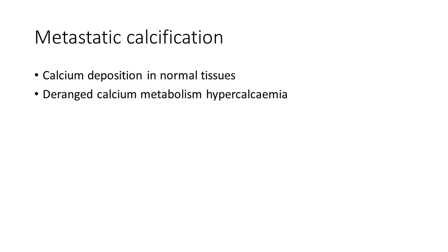Histologically, in both types the deposited calcium salts appear as basophilic, irregular granular clumps which may be seen intracellularly, extracellularly, or both. An example of dystrophic calcification is calcification in dead tissues like caseous necrosis or liquefactive necrosis, or in degenerative tissues like old scars or atheromatous plaques occurring in coronary arteries.